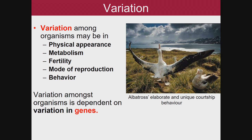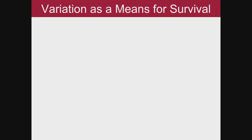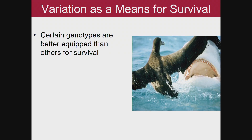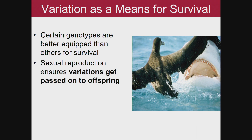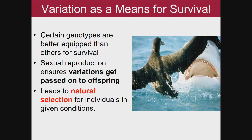Variation amongst organisms is dependent on variation in their genes. Certain genotypes are better equipped than others for survival. Sexual reproduction ensures that variations get passed on to offspring, and this leads to natural selection for individuals in given conditions.